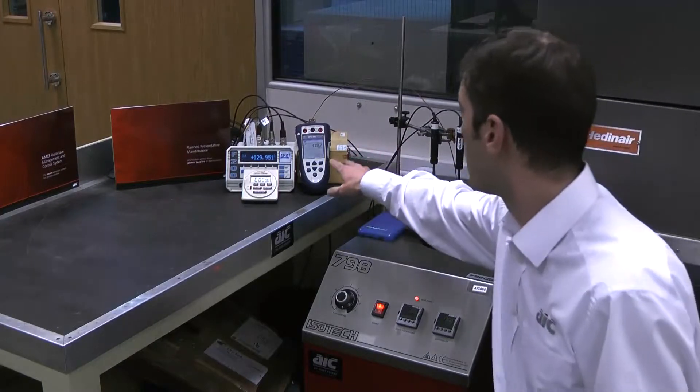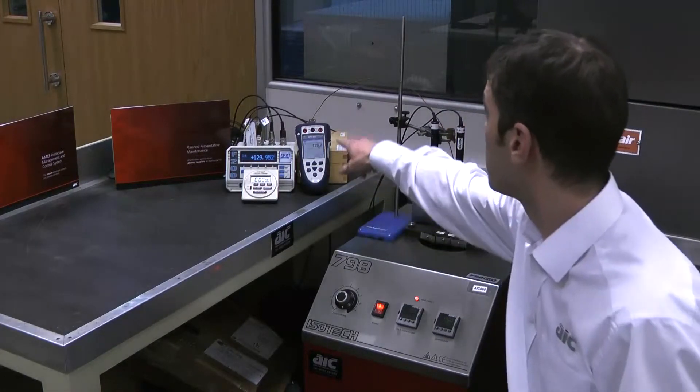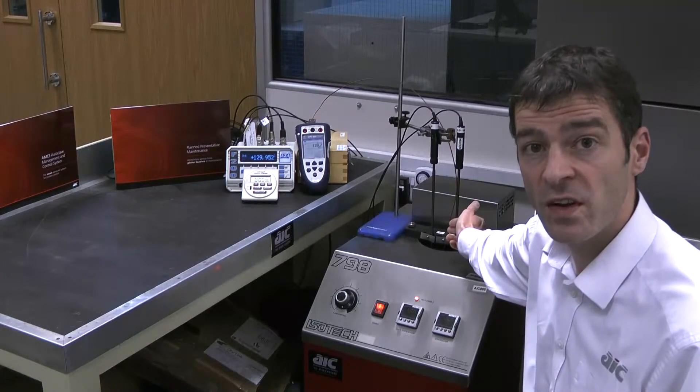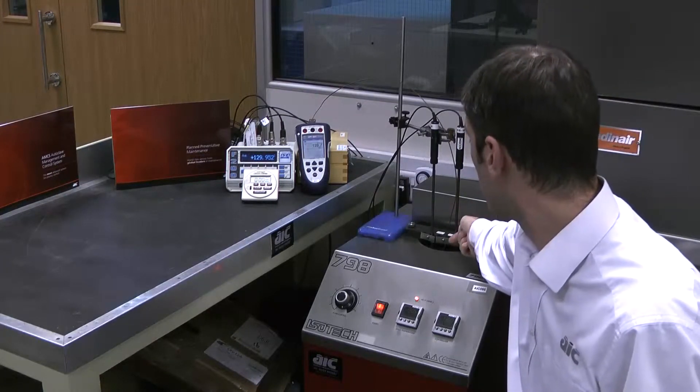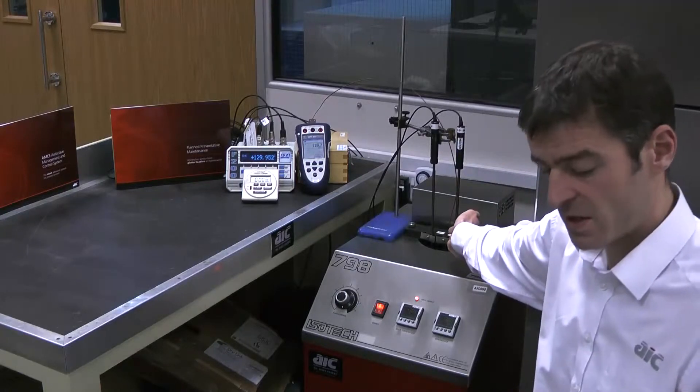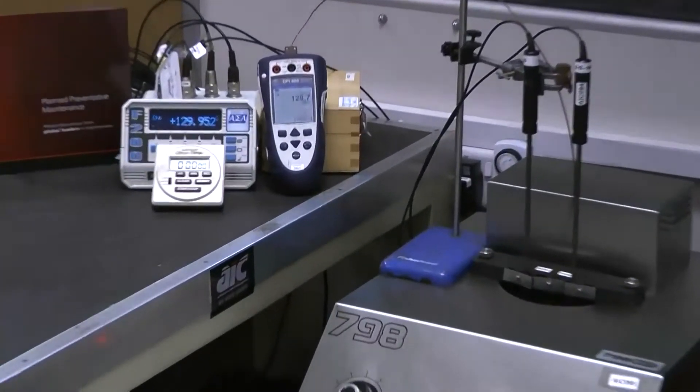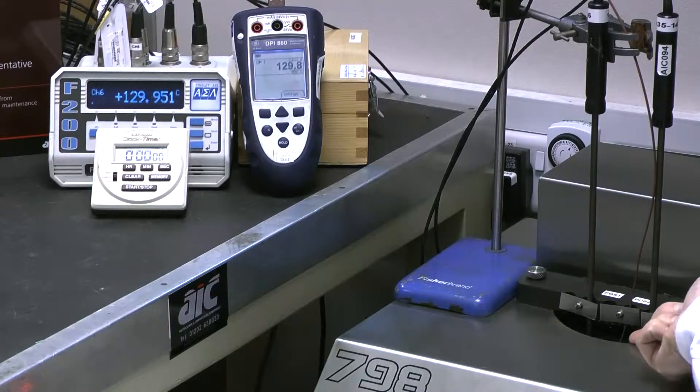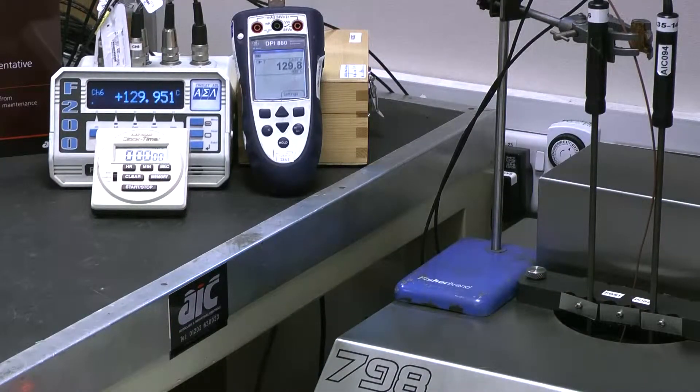And then I have a process calibrator connected to a Type T thermocouple at the moment, which is inserted in the oil bath. And you can hopefully clearly see that the portion of the thermocouple that's entering the oil, just down here, is indeed the Type T thermocouple.